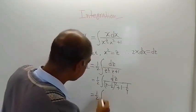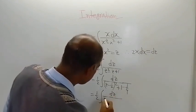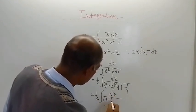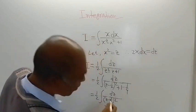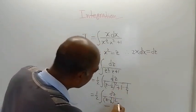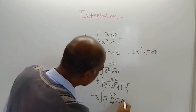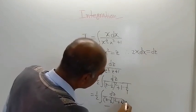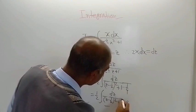So the next line will be dz divided by z minus half whole square. This is z minus half. And this is 3 by 4, that is, we can write this as root 3 by 2 whole square.